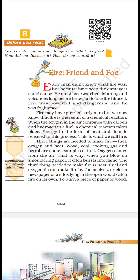Oxygen comes from the air — that is why when you blow on smoldering paper it often bursts into flame. Smoldering paper matlab jo already halka sa jala ho — jab slowly corner se burn kar raha ho, aur aap phoonk maarte hain to aag tez ho jaati hai. Wood, coal, cooking gas aur petrol fuel ke examples hain.